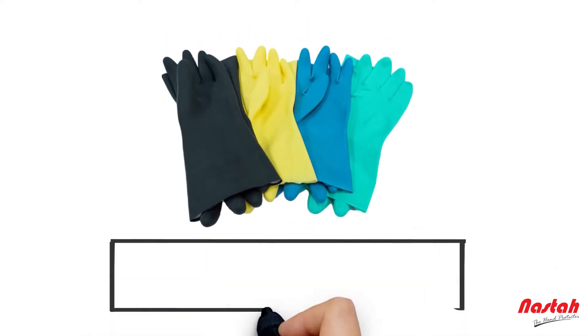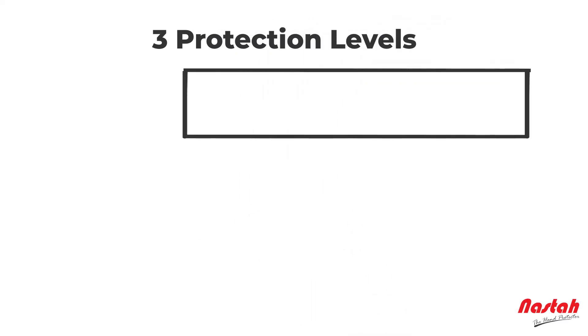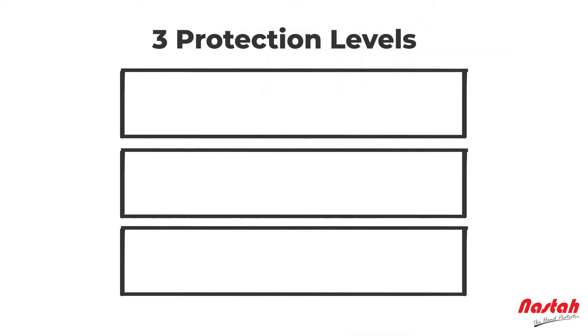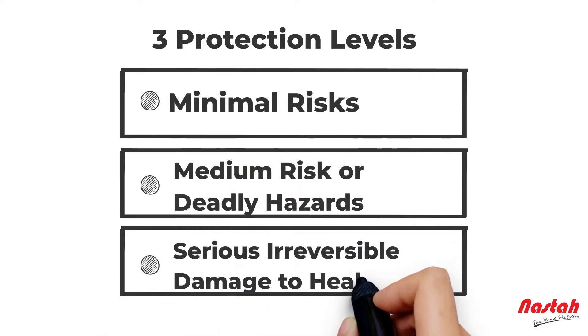Generally, PPE gloves are categorized into three categories, with each providing a different level of protection: protection against minimal risk, medium risk or deadly hazards, or serious irreversible damage to health risks.